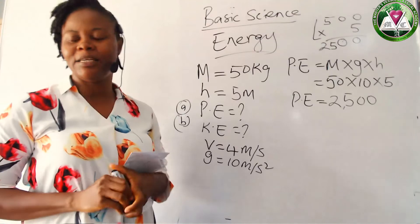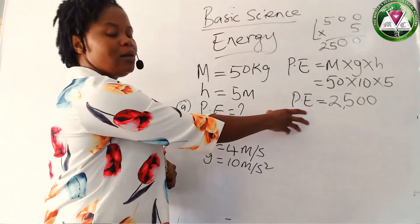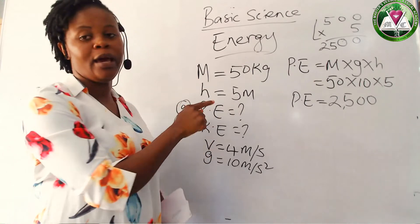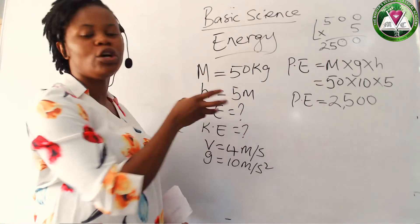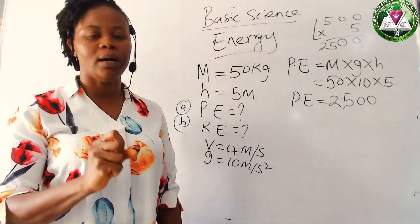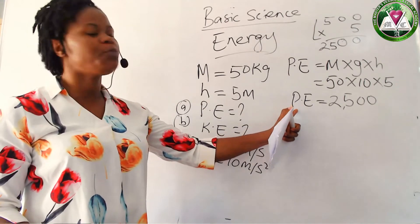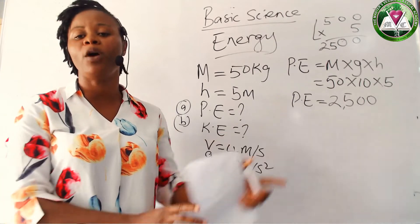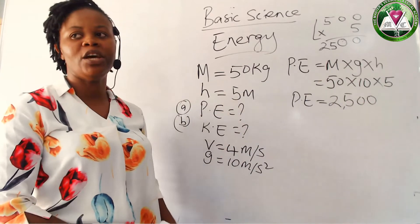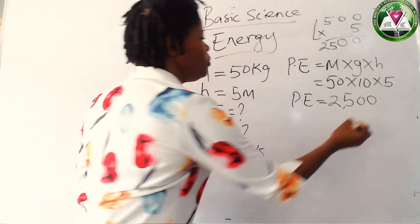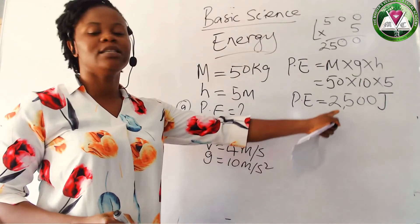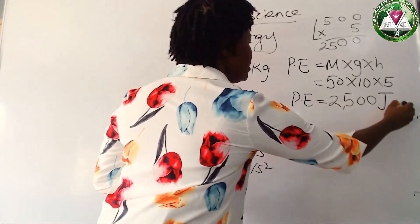Remember, after your calculation you must put the units. Don't forget to put the units. I told you that energy has an SI unit of joules. So because potential energy is a form of energy, it must be in joules. Likewise kinetic energy. So our unit will be joules — that is J.